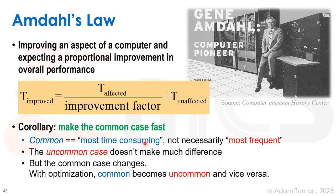For example, if we're doing 10,000 additions and one memory access for every 10,000 additions, but the memory access takes a million cycles while a single addition takes one cycle, working on the most frequent operation (addition) barely helps because we're dominated by memory accesses. So we should work on improving memory access. Even a slight improvement to memory access gives a much better total improvement. We should make the common case fast, but note that improving the common case can sometimes make the uncommon case become the new common case.